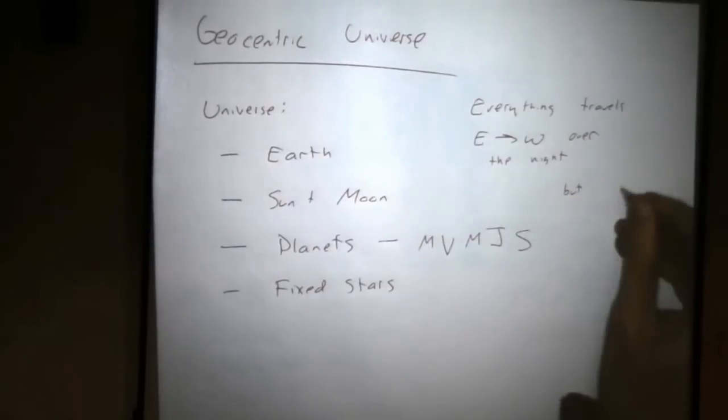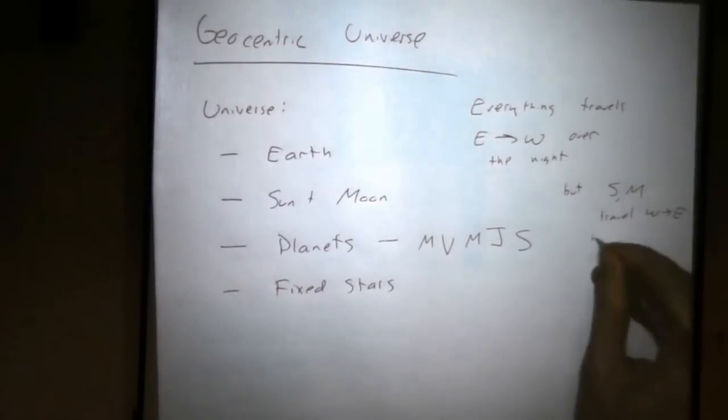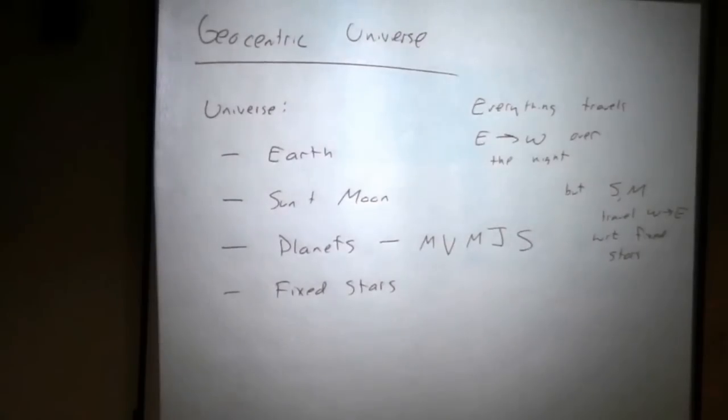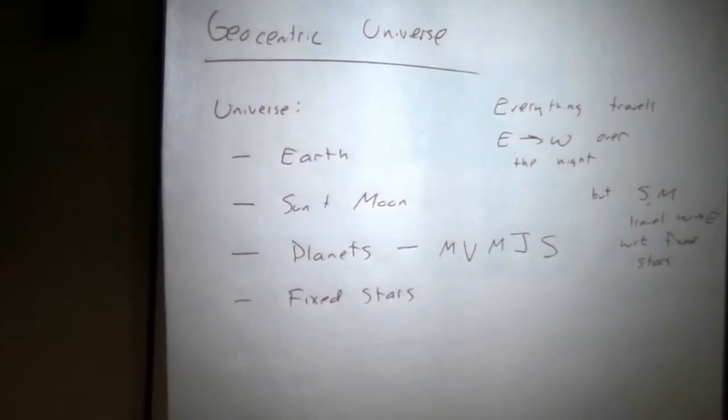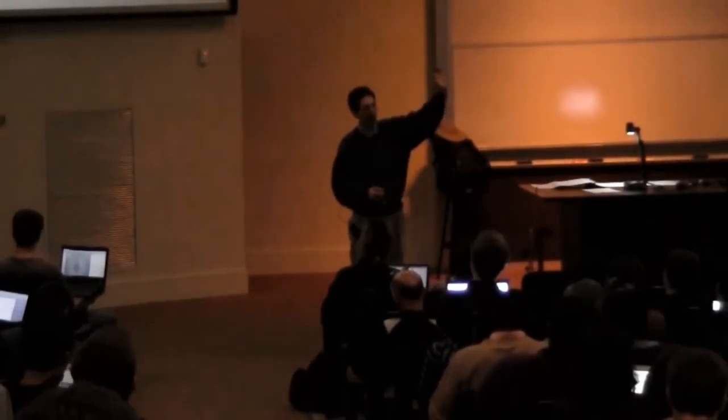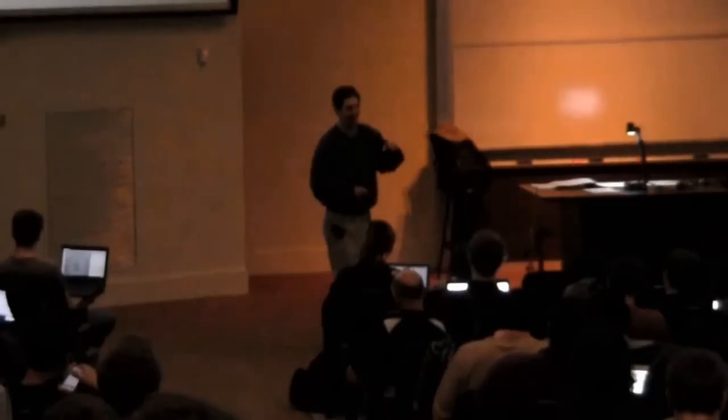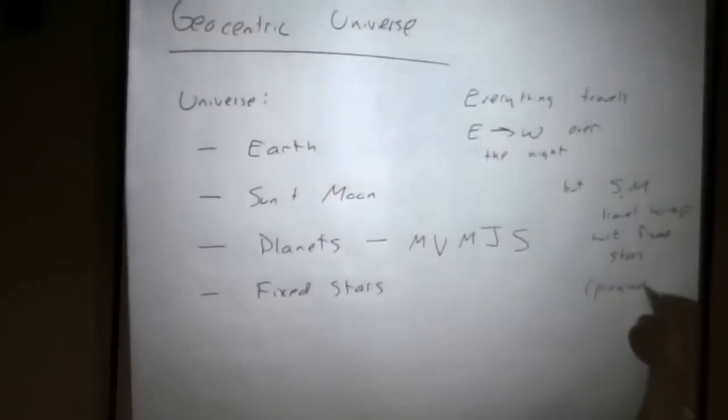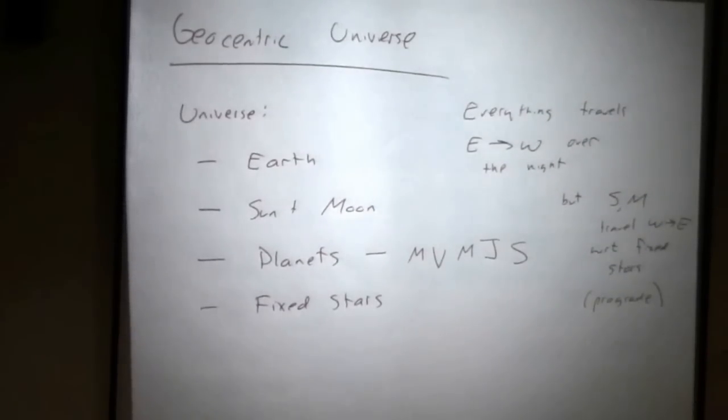But, the sun and the moon are traveling west to east with respect to the fixed stars. Again, they rise in the east and the west. But, if you take out that daily motion, everything going round and around and around, and just look at where the sun is with respect to the stars. Take out Earth's rotation as we now know it to be. The sun drifts very slowly from west to east. And we call that prograde. That's kind of the natural motion of things in the sky with respect to the stars. So this is prograde motion.